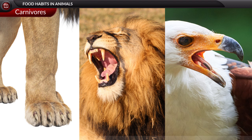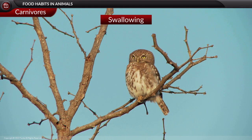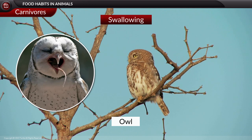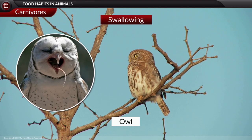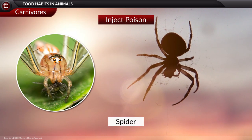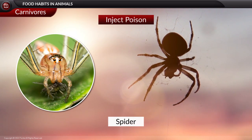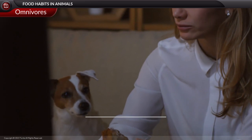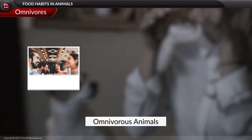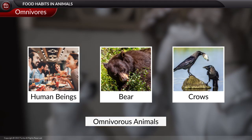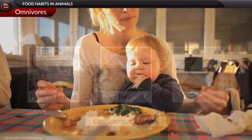Swallowing an animal completely is seen in owls, which can swallow a mouse or a frog whole. Insects like spiders can inject poison into another animal to paralyze it and dissolve it into simple forms that can be readily sucked.